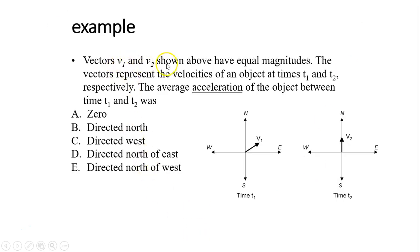Another example. Vector v1 and v2 shown above right actually over here have equal magnitudes. The vectors represent velocities of object at time t1 and t2 respectively. So the length of these two vectors are the same because they have the same magnitude. What is the average acceleration? What is the average acceleration pointing to? So this is again acceleration is the difference between velocity over time. So the direction of acceleration is the same as the difference between v2 and v1. So v2 is going up. Negative v1 would be this way. So v2 minus v1 would be this way. And this direction would be north of west. The answer is E.